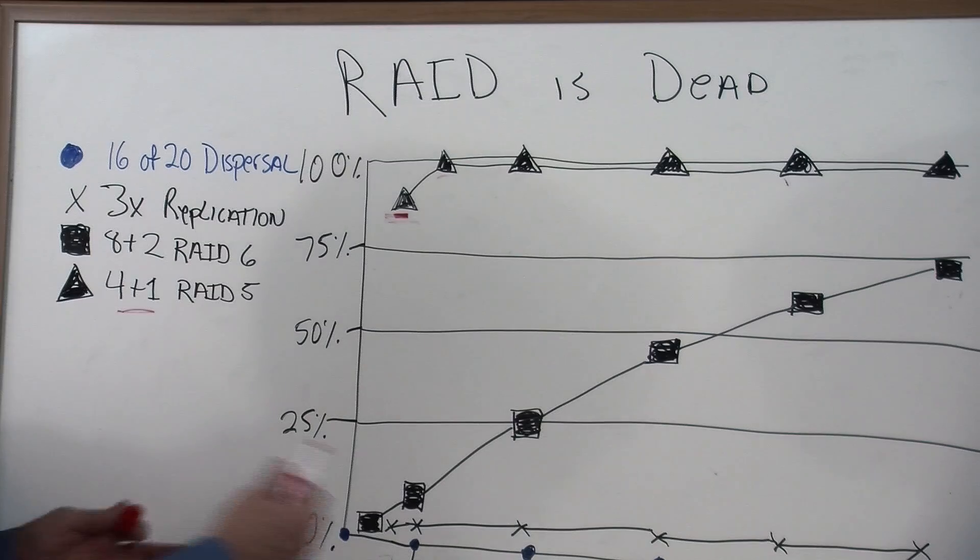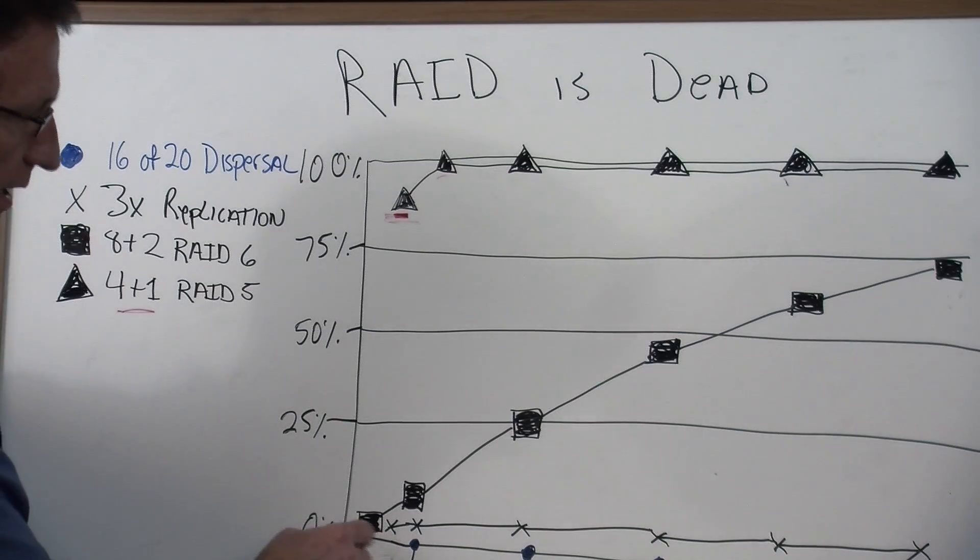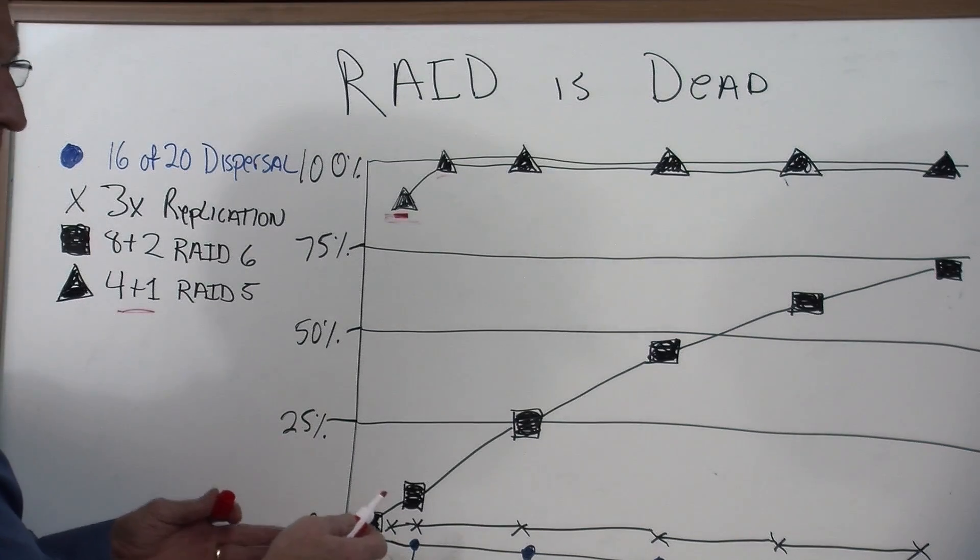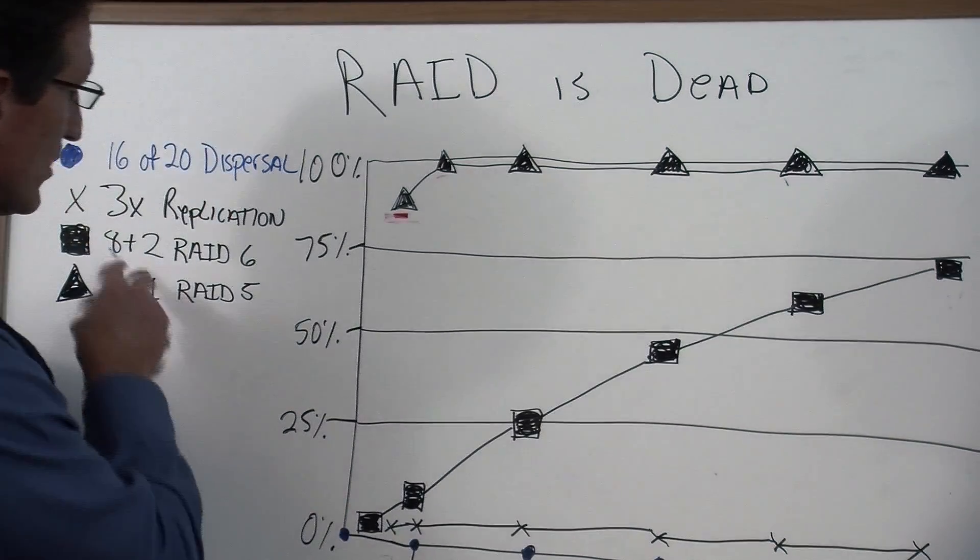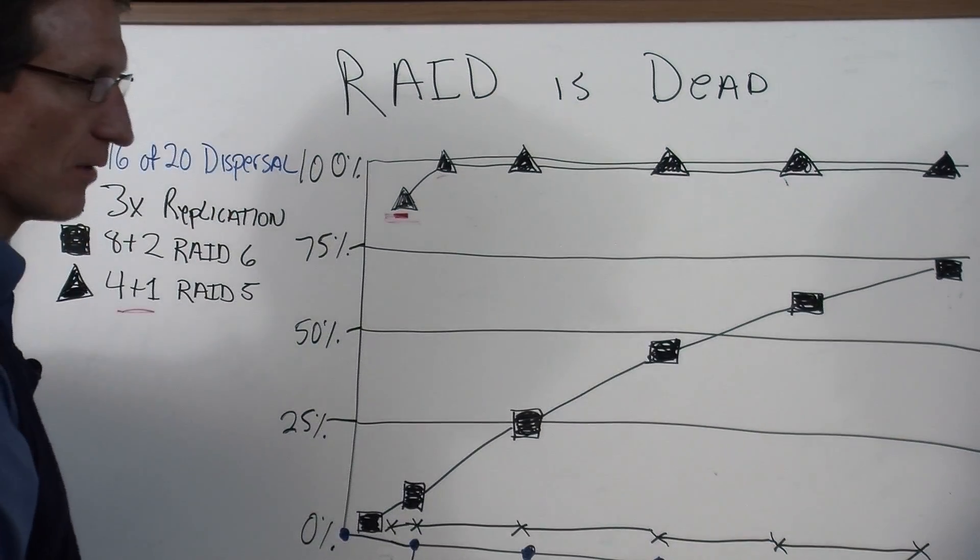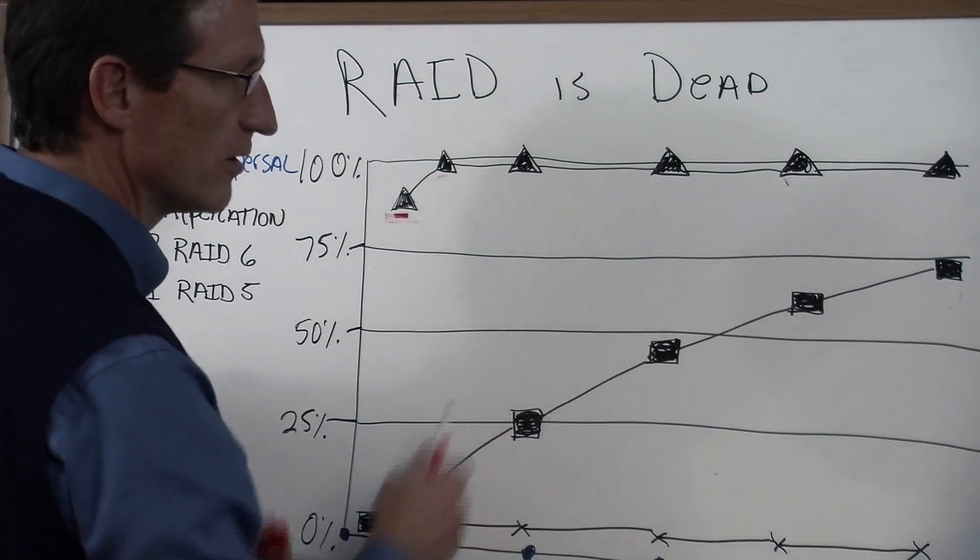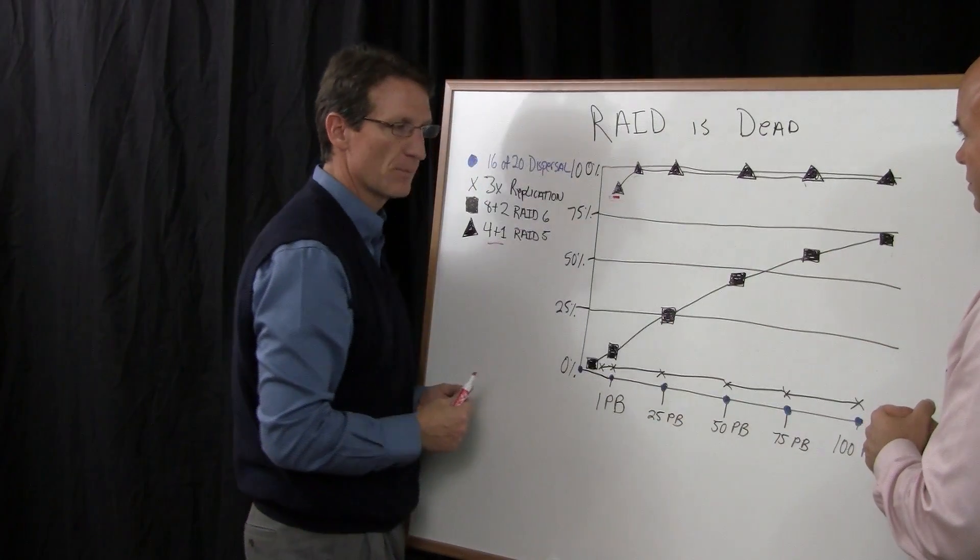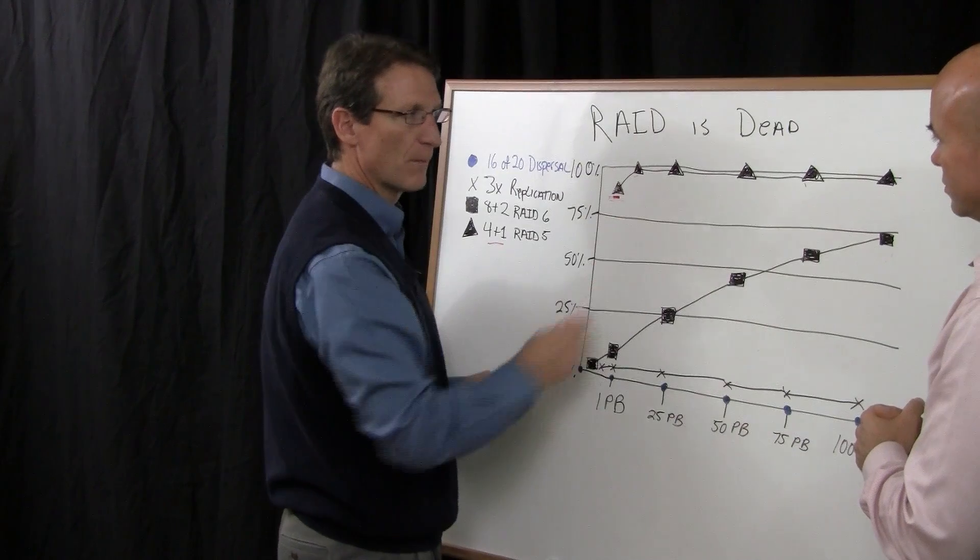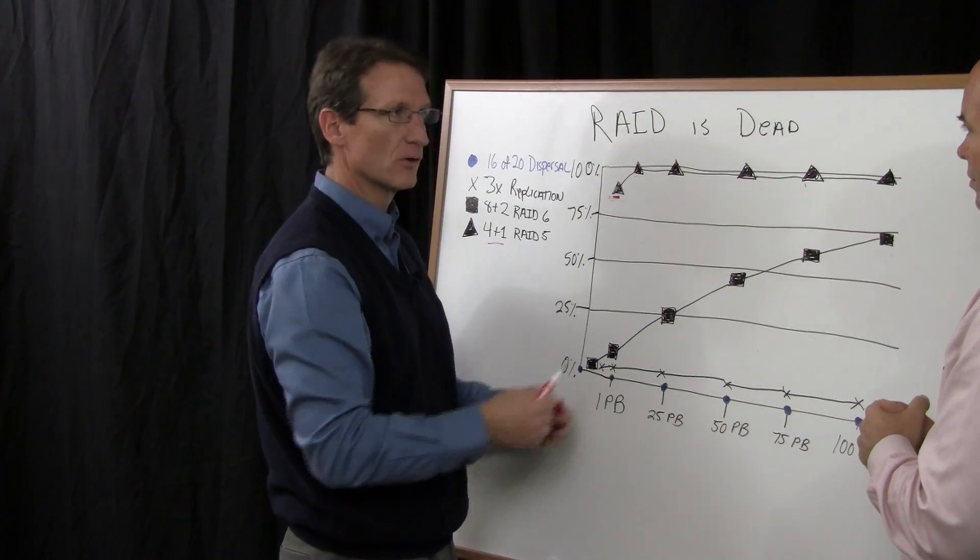So then if you look at RAID 6, it's more reliable. Certainly you start at a much more reliable rate at the beginning, but as you grow your system, the likelihood of failure, even in a RAID 6 system, which in this example is 8 plus 2 RAID 6, the likelihood of failure and data loss grows as your system grows. So you can get out to about 100 petabytes of information, you're about 75% likely that you're going to lose data.